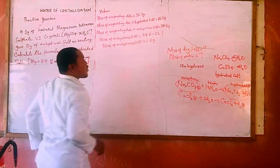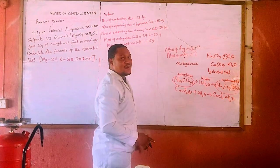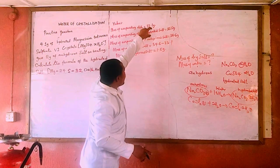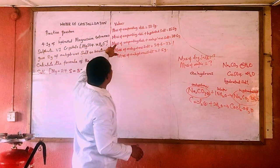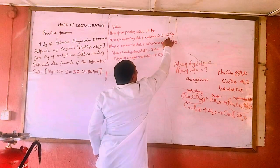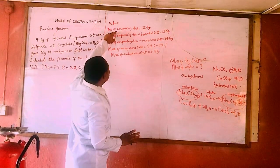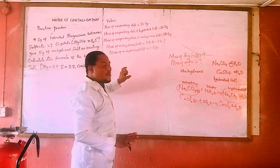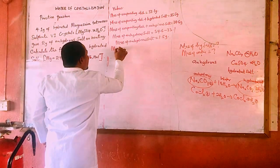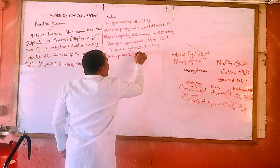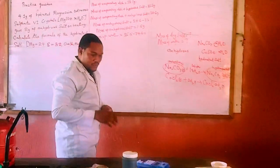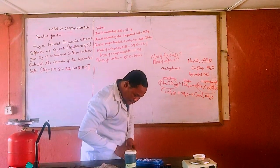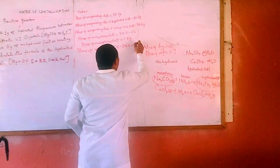The mass of the anhydrous salt is 1.5 grams. Now we need the mass of water. Mass of dish plus hydrated salt was 35.5 g; mass of dish plus anhydrous salt is 34.6 g. Subtracting: mass of water = 35.5 − 34.6 = 0.9 grams.